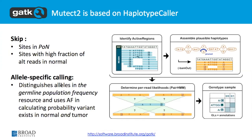The core of Mutect2 calls the same code used in HaplotypeCaller — it uses the same assembly engine and pair HMM, and the logic starts similarly with identifying active regions. However, in the somatic case it is different: there's a model that handles active region detection, and we want to skip sites that are likely germline variants. We don't want to assemble in regions with germline mutations because assembly is expensive. We only assemble regions where somatic variants are likely.